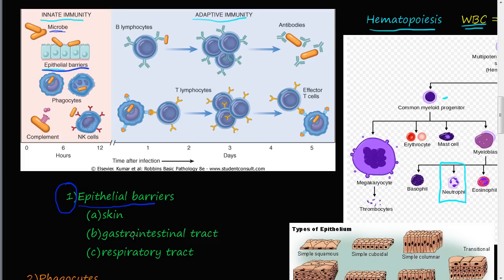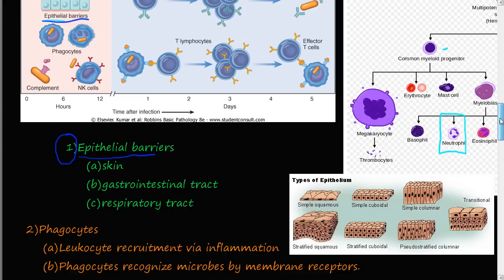Inside the gastrointestinal tract — the stomach, small intestine, large intestine, and esophagus — all serve as a barrier preventing microbes from entering our bodies. The same applies to the respiratory tract: when we breathe in air, there are microbes inside, and the respiratory tract helps prevent those microbes from entering. Now let's move on to phagocytes, which is number two. Number three is complement, and number four is NK cells, or natural killer cells.